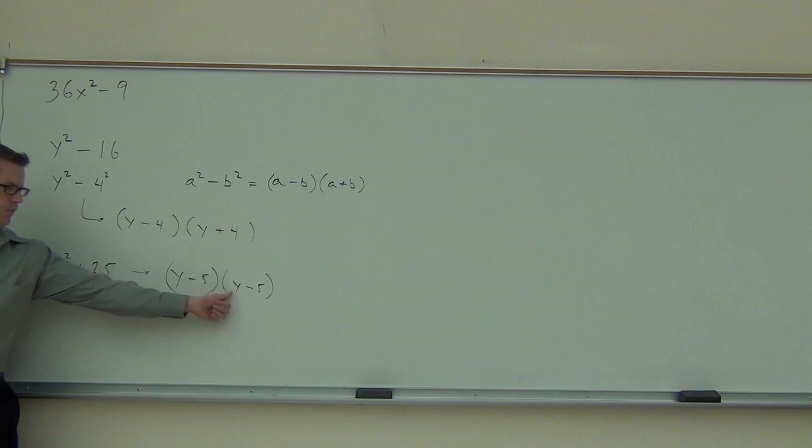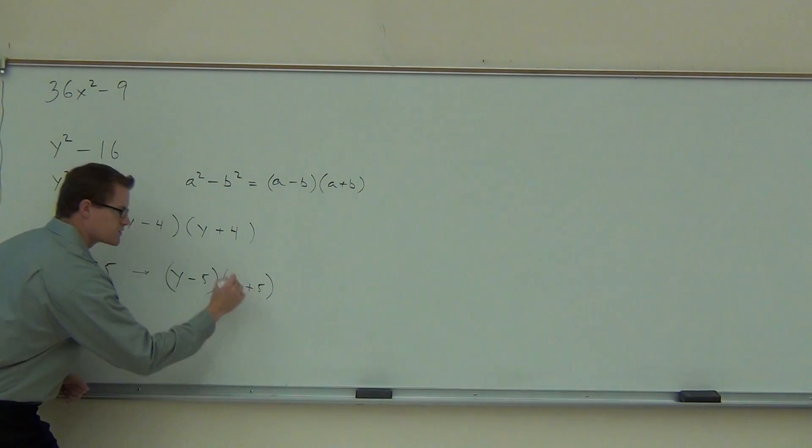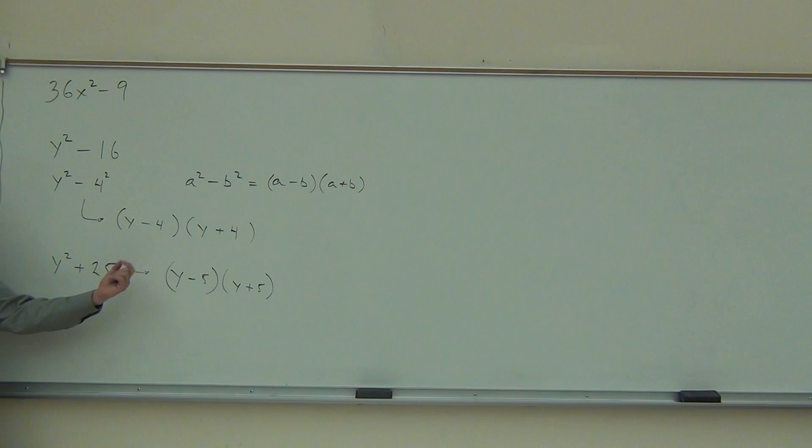I would get y squared minus 5y, minus 5y, that gives me minus 10y, and then the plus 25. But you might be thinking, what happens if I just do the same thing? Well, in this case, we'd eliminate the middle terms, but would I get plus 25 or minus 25 out of this one? That wouldn't be the same thing. This would be y squared minus 25. This one is not factorable.